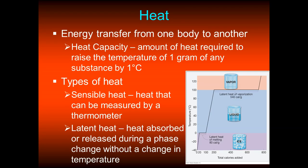There are two different types of heat. Sensible heat is heat that can be measured using a thermometer — today's outdoor temperature or your body temperature of 98.6°F are examples of sensible heat. Latent heat is heat absorbed in an endothermic or released in an exothermic reaction during a phase change, without a change in temperature.